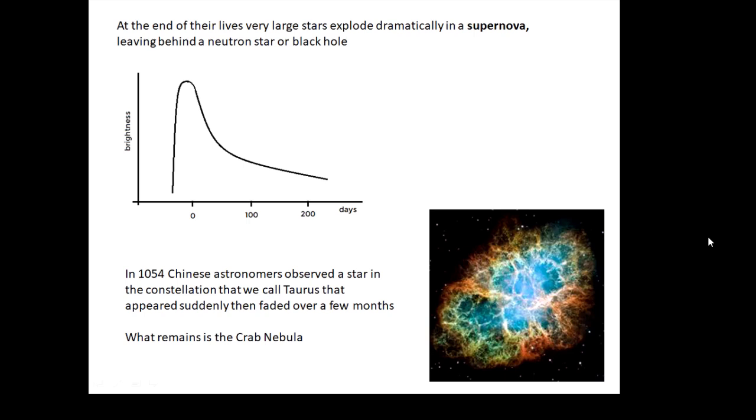And it disappears. In 1054, Chinese astronomers observed a star in the constellation that we call Taurus, and then this star faded away over a couple of months. If you look where it was, you see the Crab Nebula, which is a supernova remnant. Somewhere in the middle of the Crab Nebula there is a black hole.